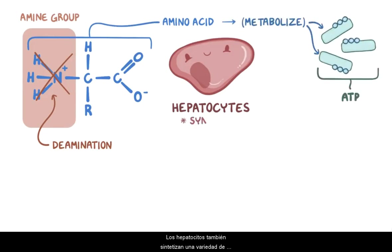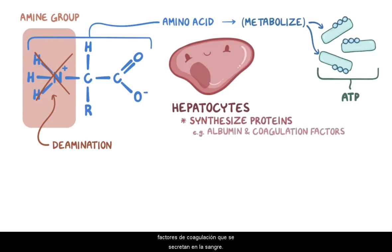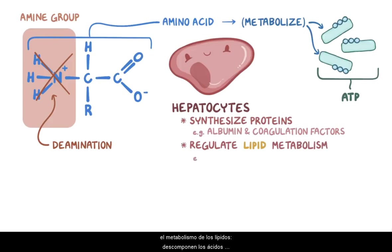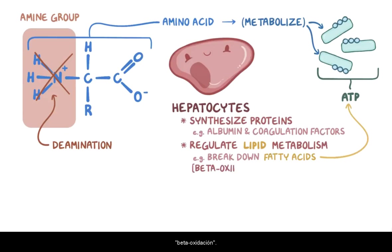Hepatocytes also synthesize a variety of important proteins, like albumin and coagulation factors, which get secreted into the blood. Lastly, these cells also regulate lipid metabolism. They break down fatty acids in order to generate ATP, using a process called beta-oxidation.